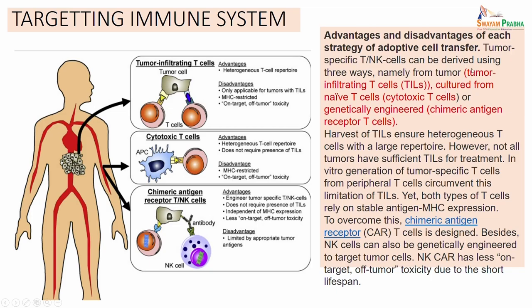They can be derived from the tumor, and when they are derived from the tumor they are called the tumor infiltrating T cells. Or they can be cultured from the naive T cells, the cytotoxic T cells. Or they can be genetically engineered to recognize a particular tumor specific antigen, and that is called the chimeric antigen receptor T cells.